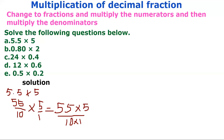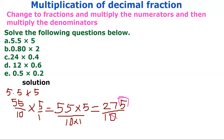55 times 5 is 275 over 10. Since it's over ten, move the point one place from the back. The final answer is 27.5.